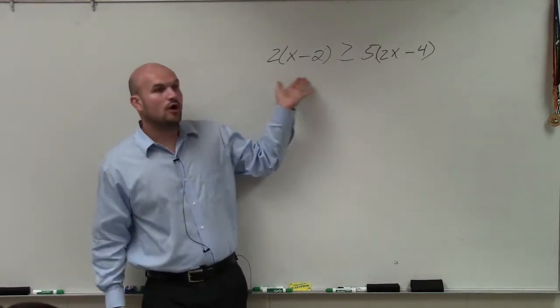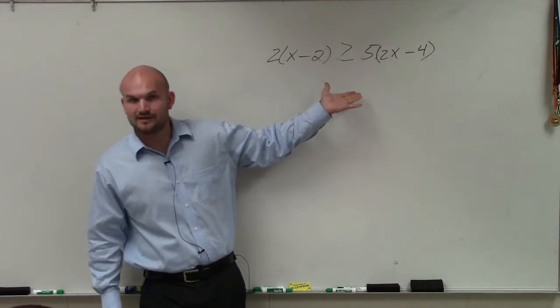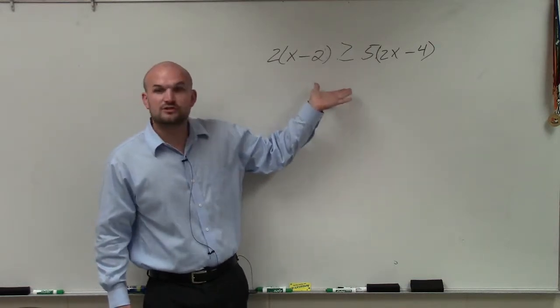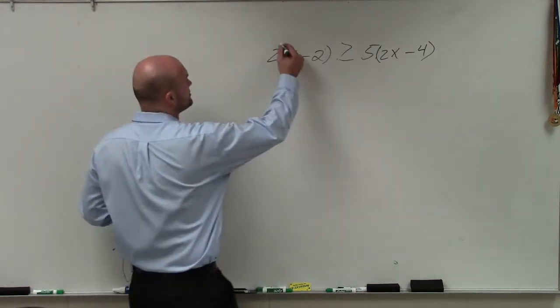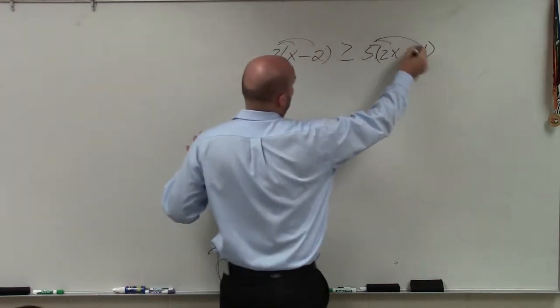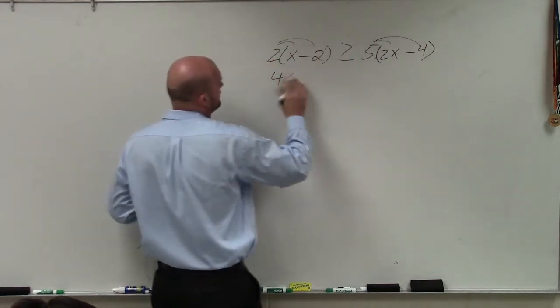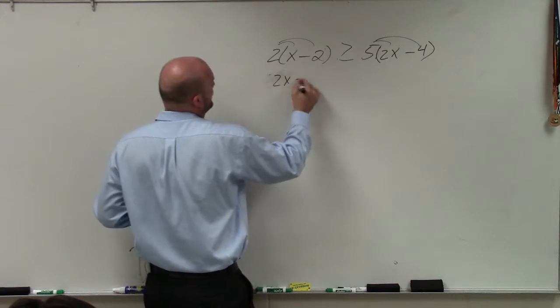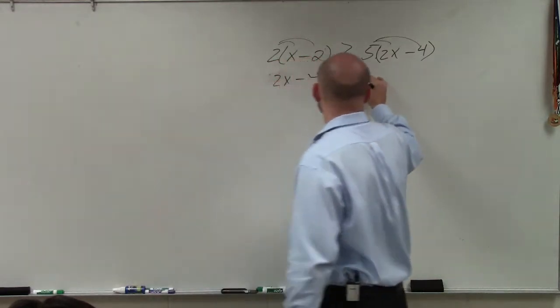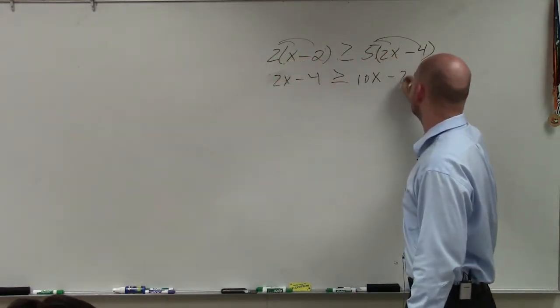The first thing to do is always simplify the left and the right side. So we see that we have parentheses. So to simplify this, we're going to want to apply distributive property. And therefore, we have 2x minus 4 is greater than or equal to 10x minus 20.